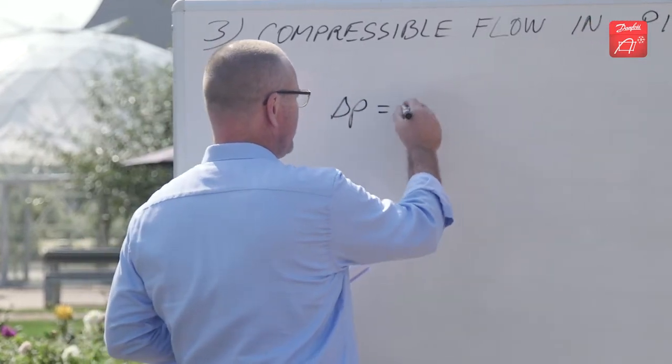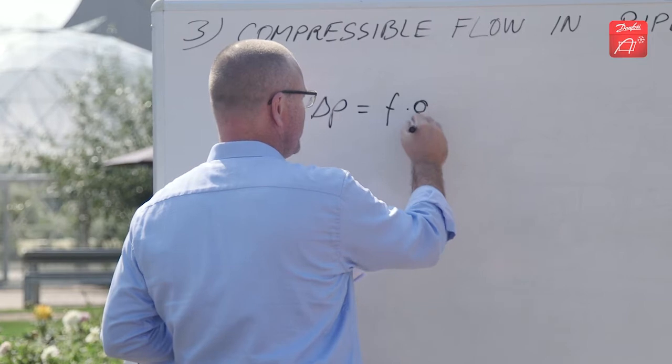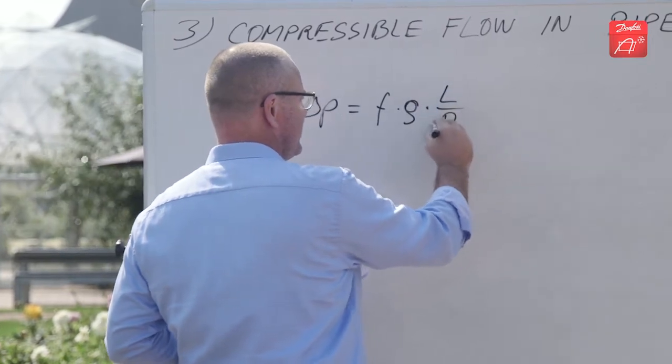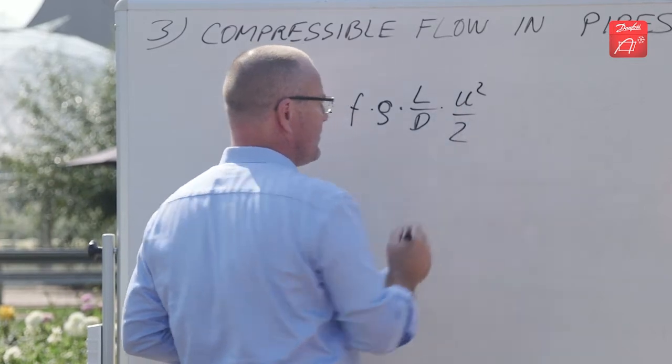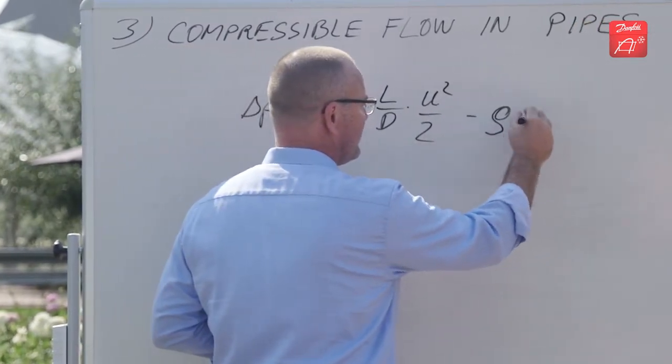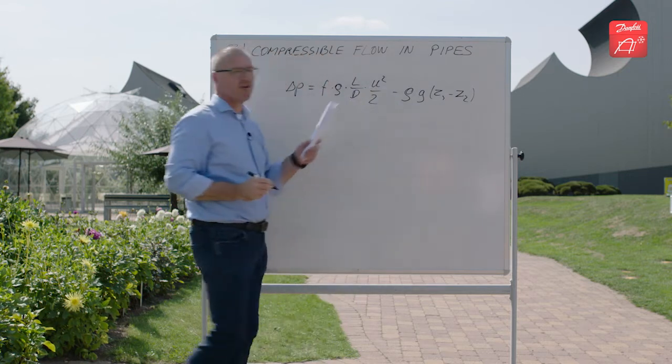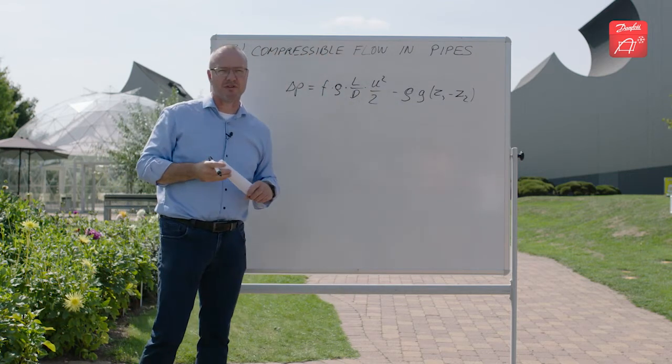We had that the pressure drop was equal to the friction factor times density, length over diameter, velocity squared half, and then minus the pressure drop due to any height difference you might have in your pipe.